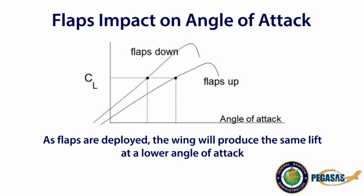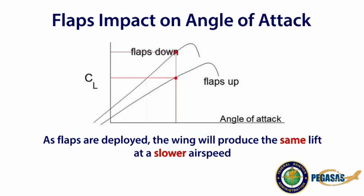Here is a graph of the coefficient of lift with flaps up and flaps down. Flaps allow us to maintain the same coefficient of lift at a lower angle of attack, which allows for variations in descent profiles. Or, flaps allow us to achieve a greater coefficient of lift for the same angle of attack, which provides for a reduction in approach speeds while maintaining the same amount of lift. Regardless of how a pilot utilizes flaps during an approach, it is important to determine if the angle of attack system being used is calibrated in multiple wing and flap configurations or in a single configuration.